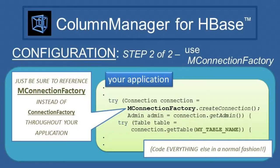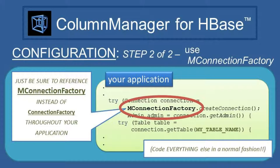The final, essential step of configuration is all up to the application developer. In your code, simply use Column Manager's MConnectionFactory instead of the standard HBase ConnectionFactory, anywhere in your code where you create a connection. Other than that, code your application as normal, and Column Manager will work behind the scenes as a very thin and invisible wrapper around the standard HBase client interfaces.